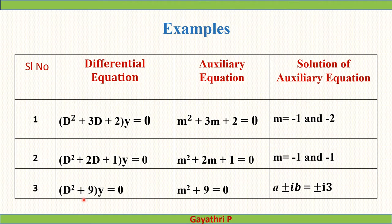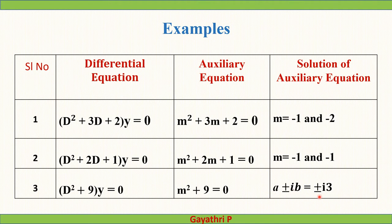Third example: (D² + 9)y = 0. Its auxiliary equation is m² + 9 = 0, giving m² = -9, so m = ±3i. Here a = 0 and b = 3. The form a ± ib represents complex roots existing in conjugate pairs. So this equation has complex roots +3i and -3i.